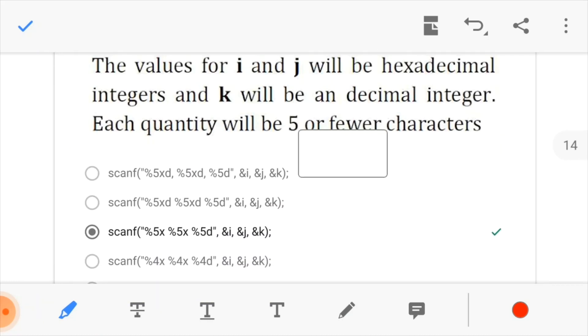Now, this one says the values for i and j will be hexadecimal integers, and k will be a decimal integer. Each integer or each quantity will be five or fewer characters.